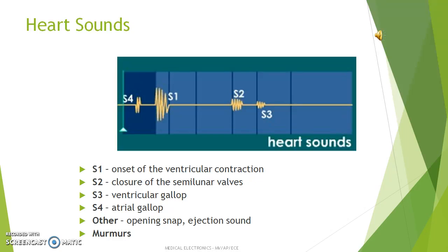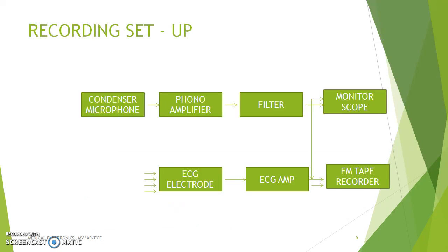This is the recording setup of the PCG waveform. The recording setup consists of the following components: a condenser microphone, a phone amplifier, a filter, a monitor scope, an ECG electrode, an ECG amplifier, and finally a tape recorder. Initially the heart sounds are converted into electrical signals by means of a microphone pressed against the chest wall by a strip. The pickup is successively located at different areas. The electrical signals from the microphone are amplified by a pre-amplifier, followed by a filter and recorder. Electrodes are also placed on the limbs to pick up the electrical activity of the heart, and these signals are amplified and recorded. The recorded ECG is used as a reference for the PCG.